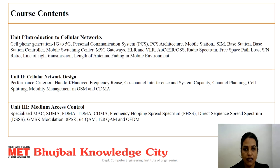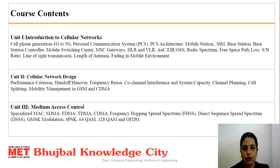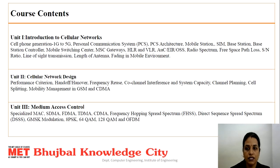Also covered in Unit 1 are gateways, HLR, VLR, AUC, EIR, OSS, radio spectrum, free space path loss, signal-to-noise ratio, line of sight transmission, length of antenna, and fading in mobile communication.